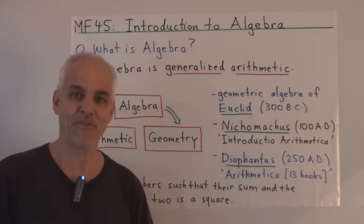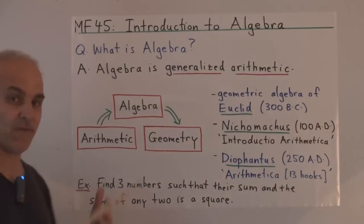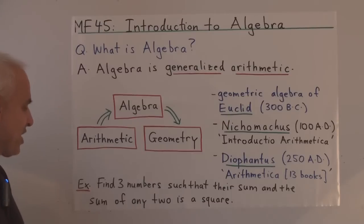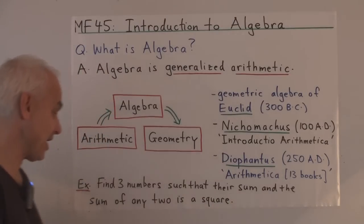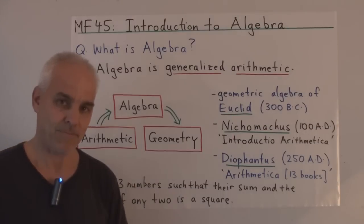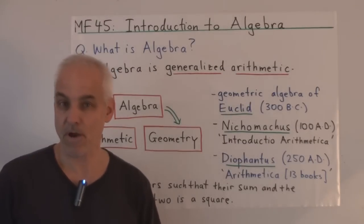But nevertheless, he gives us a very thorough treatment of a lot of different problems. Somewhat unrelated, perhaps, and not a lot of systematic theory, but he's able to solve a lot of interesting problems, such as this one here. Find three numbers, such that their sum, and the sum of any two of them is a square.